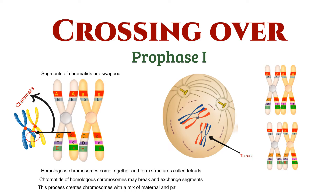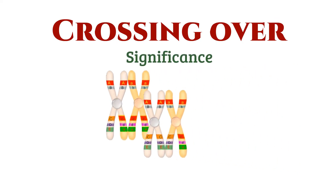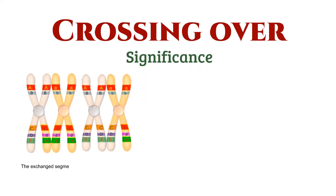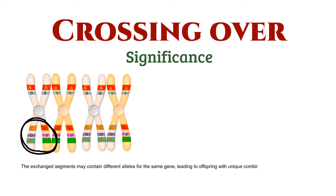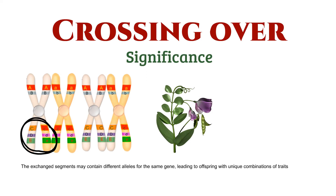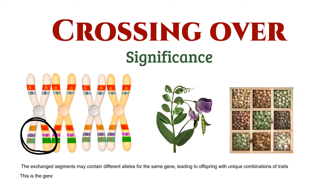This process creates chromosomes with a mix of maternal and paternal segments, adding a dash of genetic variety. The exchanged segments may contain different alleles for the same gene, leading to offspring with unique combinations of traits. This is the genetic diversity that keeps populations adaptable and evolving.